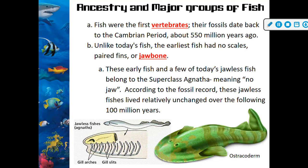Fish were the first vertebrates according to evolutionary science. Their fossils date back to the Cambrian period, about 550 million years ago. Unlike today's fish, the earliest fish had no scales, paired fins, or jaw bone. These early fish and a few of today's jawless fish belong to the superclass Agnatha, meaning 'no jaw.' According to the fossil record, these jawless fishes lived relatively unchanged over the following 100 million years.